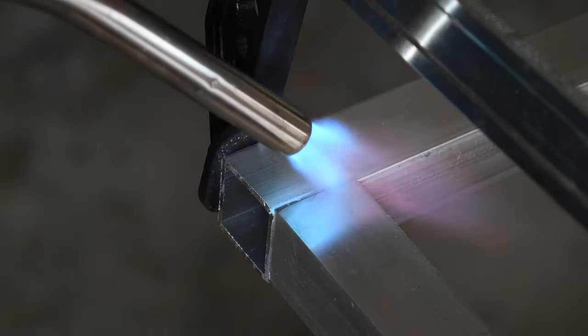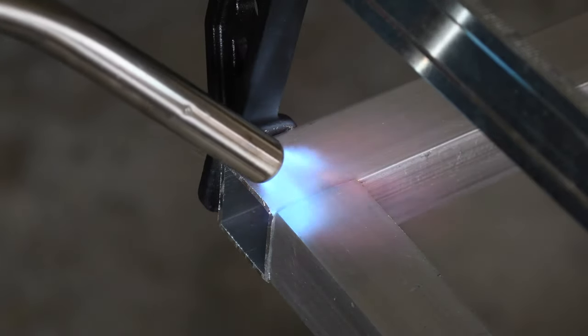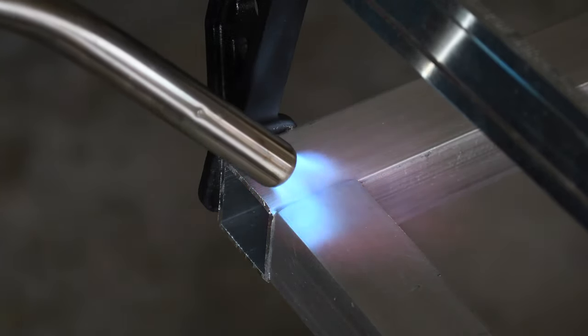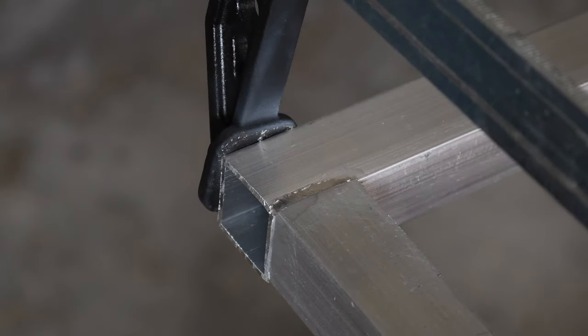Because when you melt the brazing rod with the heat of the torch, the brazing material is just going to cool down when it contacts the metal tubes and it's not going to create a joint.